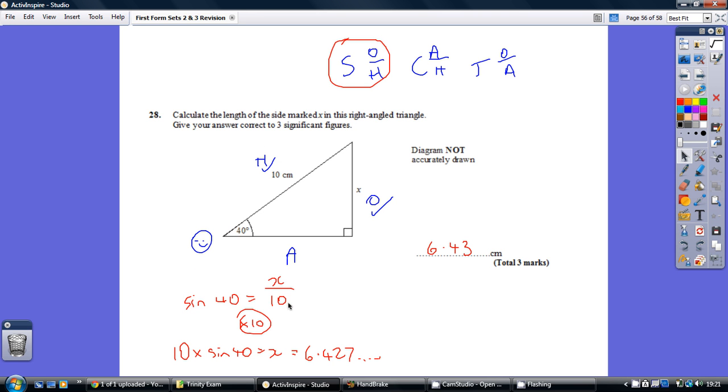From now onwards it's just algebra. How do we undo a dividing by 10? With times by 10. Pop this into your calculator and you get this, which rounds to this, to three significant figures.